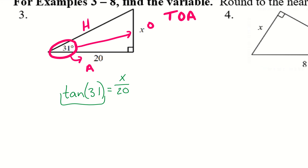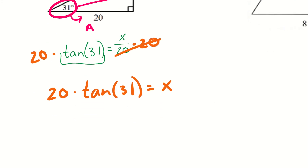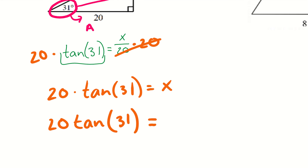Now inverse operations come in. We have X divided by 20, so multiply both sides by 20. Now we have 20 times tangent of 31 equals X. Plug into your calculator: press 20, then tan, plug in 31, close the parenthesis, press equal. Rounding to the nearest hundredth, X ≈ 12.02.